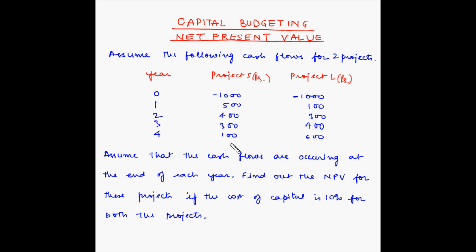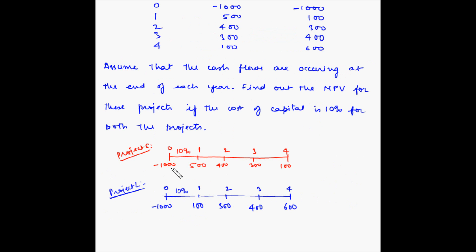Let us first draw the time scale for both these projects. The outlay or investment is shown with a negative sign because this is money coming out of our pocket, whereas the cash inflows are shown with a positive sign because this is coming into our pocket. The cost of capital is 10% for both projects.